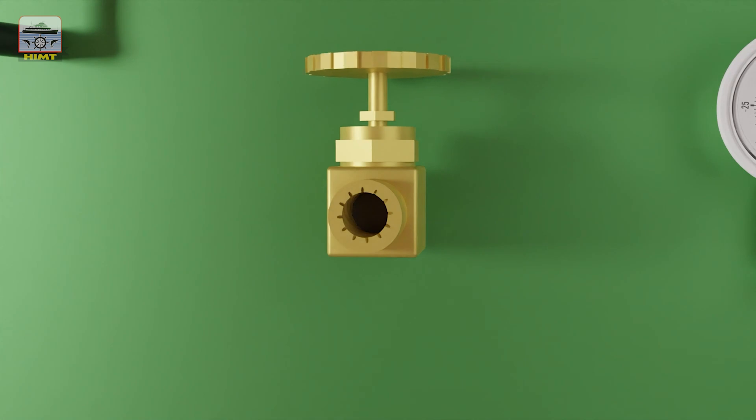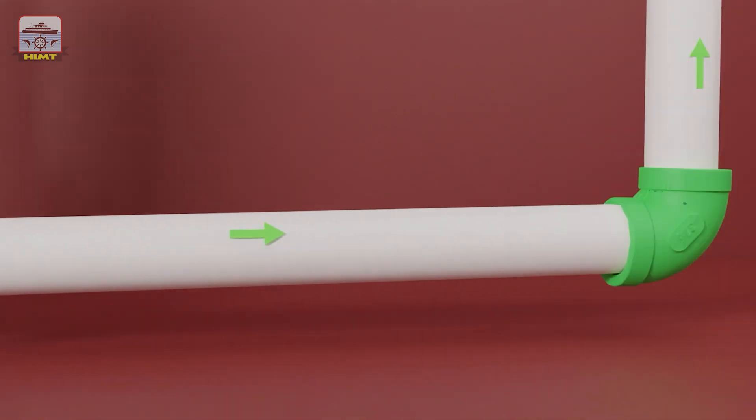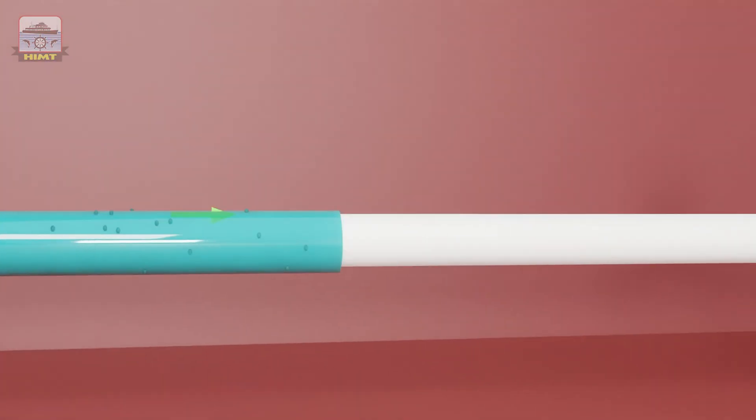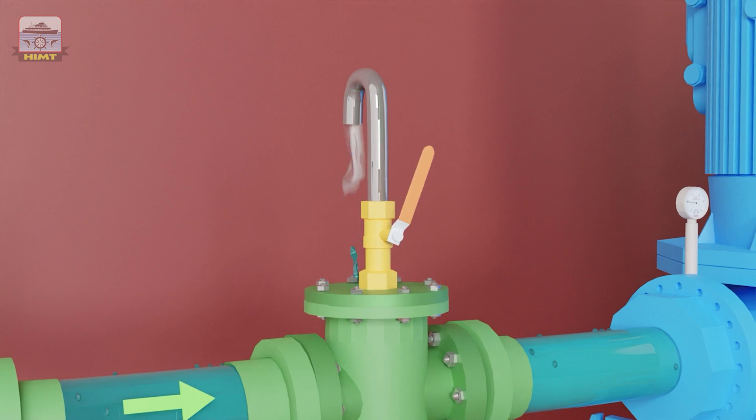Let's begin by shutting the vacuum breaker valve and take note of the flow meter reading. Now open the suction side valves of the ejector pump and purge the air from the system using the vent valve on the strainer.